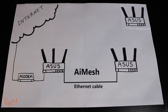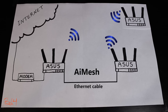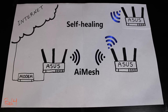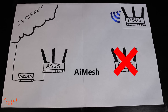For example, I can simply add another AI mesh node if I need to, and the system will automatically find the best connection to the primary router. If for any reason this cable goes bad, it will automatically switch to wireless and everybody stays connected. And even if this node goes down, the other one automatically tries to find an alternative way to connect to the primary router.